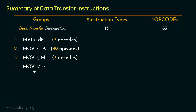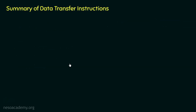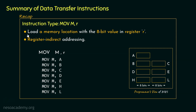The fourth type is MOV M, R, which performs exactly the opposite of MOV R, M. Here we load a memory location with the 8-bit value present inside the register specified by R. This instruction, like the previous one, falls under the register indirect addressing category because the memory location is never mentioned in the instruction itself. Before executing any of these seven instructions we must ensure the intended memory location has been loaded into the HL register pair. So with this type we covered seven more opcodes.